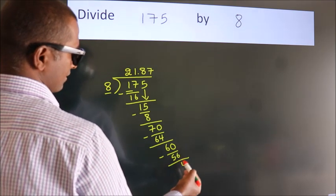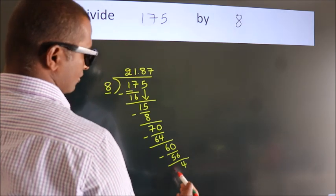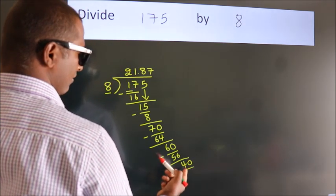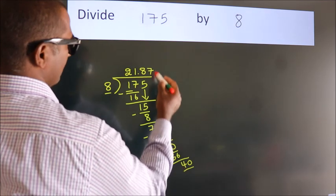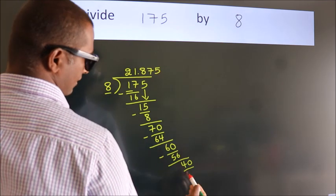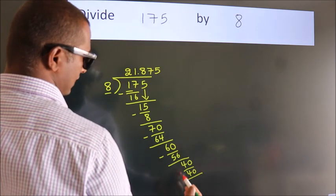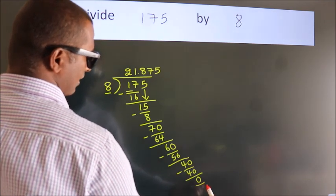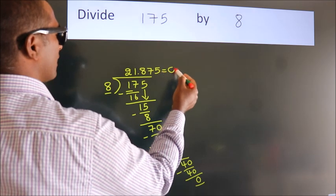After this, we already have the decimal. So, this is our quotient. Here we got remainder 0. So, this is our quotient.